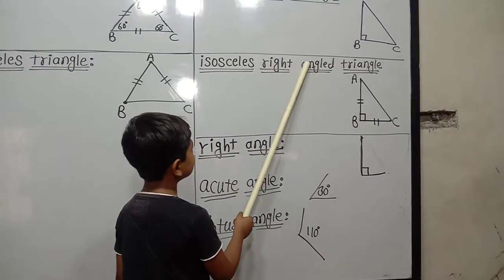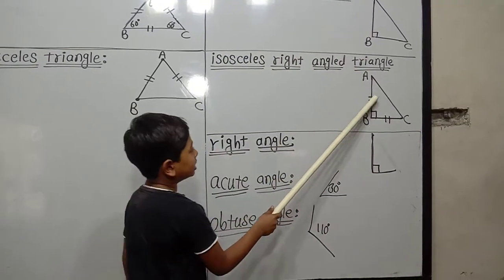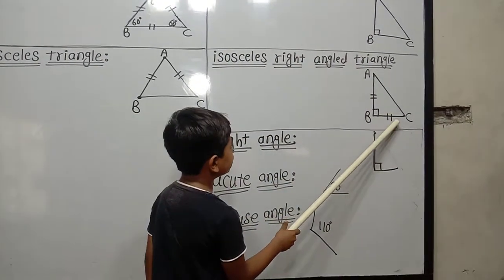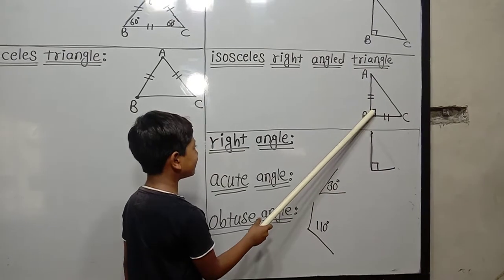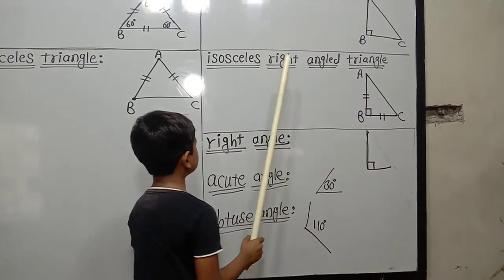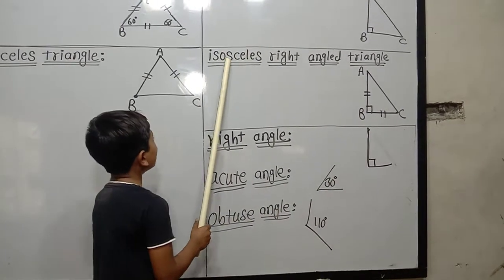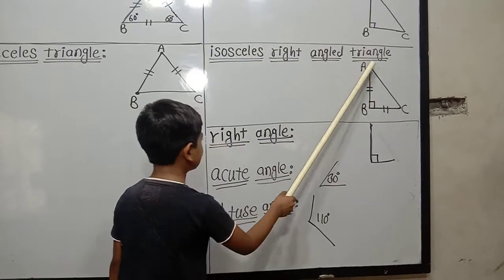Isosceles right triangle: if two sides of a triangle are congruent and one angle is 90 degrees, then that triangle is called an isosceles right angle triangle.